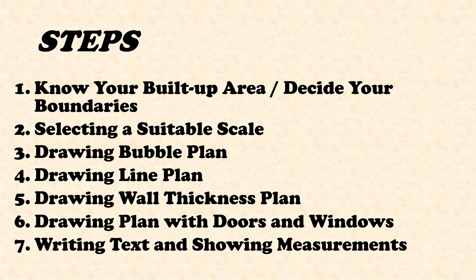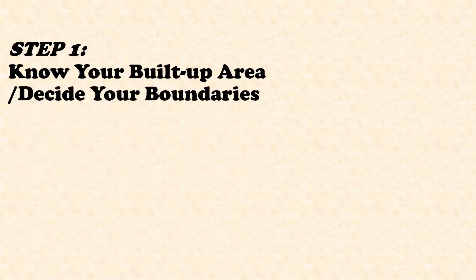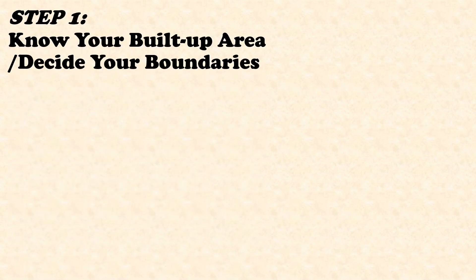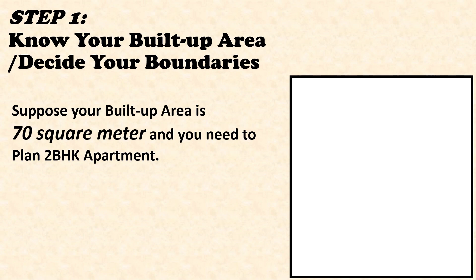Step number one is know your built-up area or decide your boundaries. Here we are going to plan a single block of an apartment of which the built-up area—that is the total usable carpet area plus the area of walls—is 70 square meters.